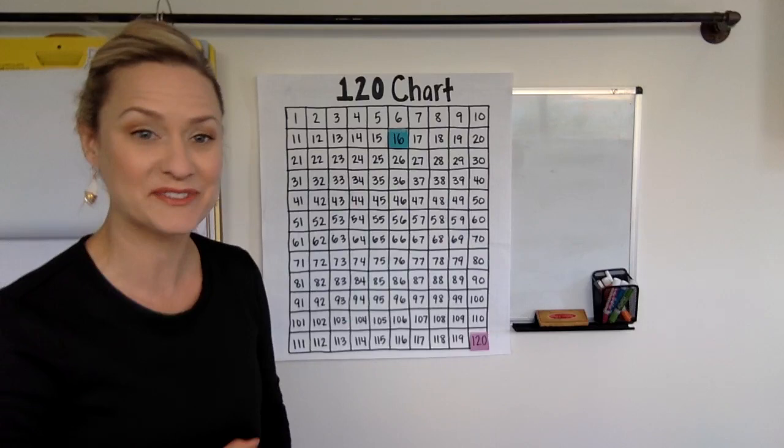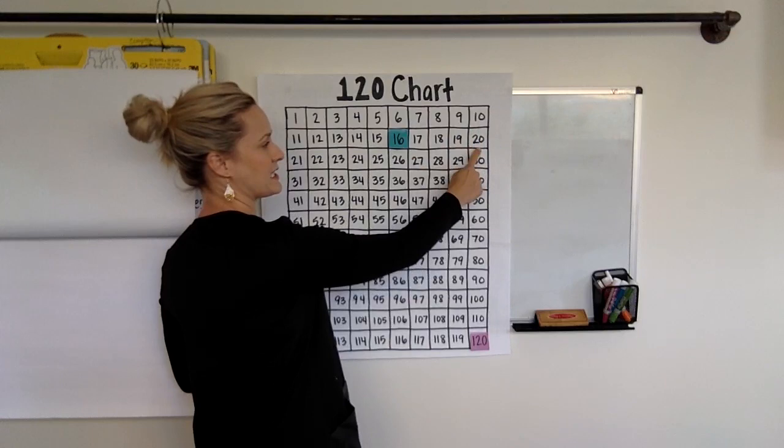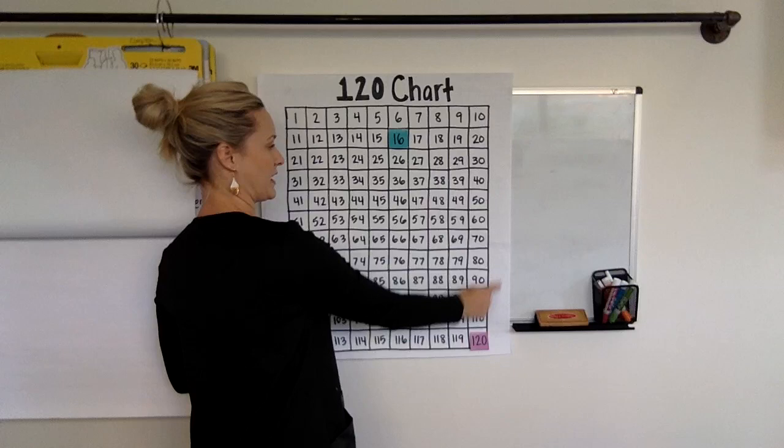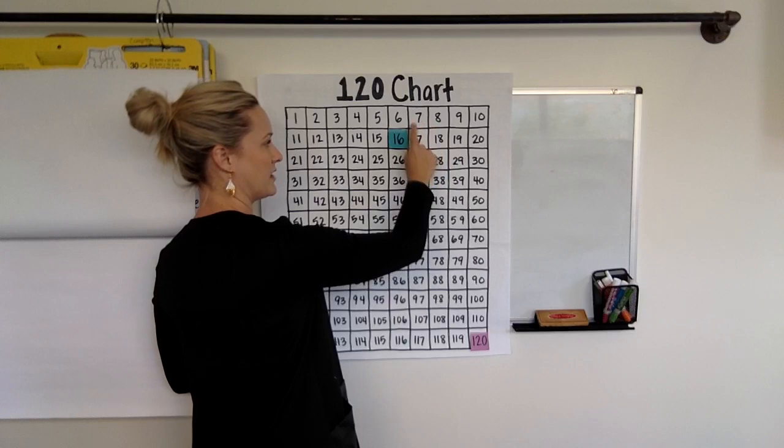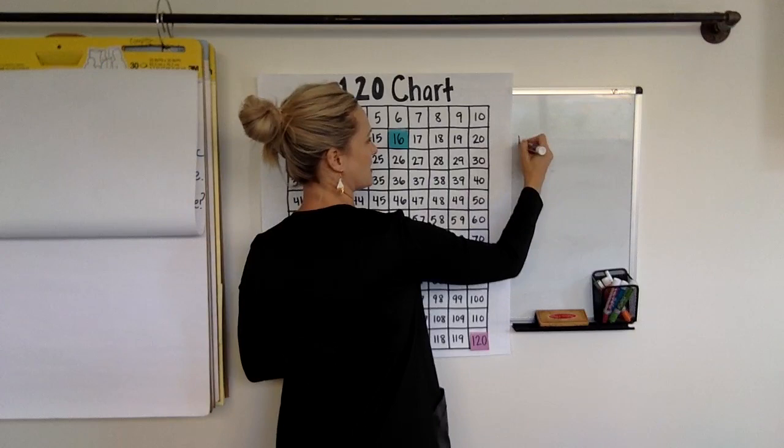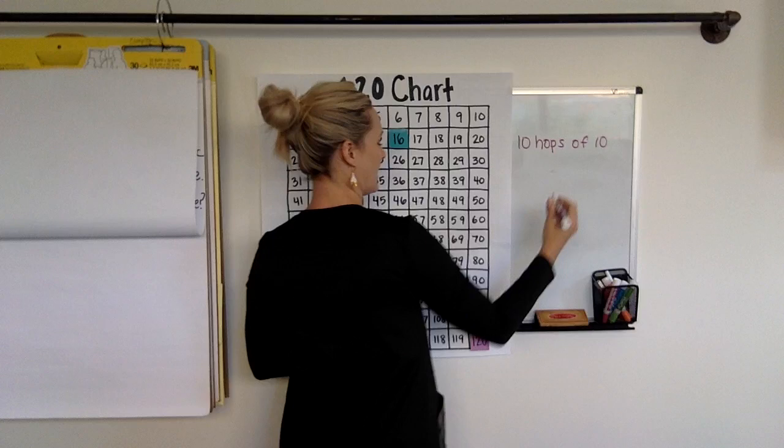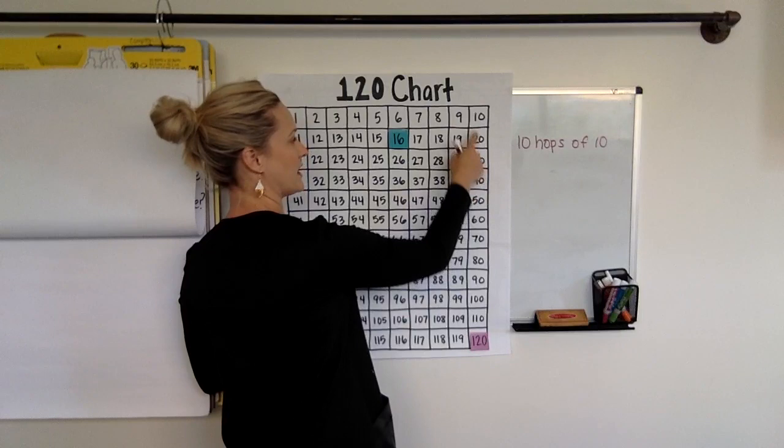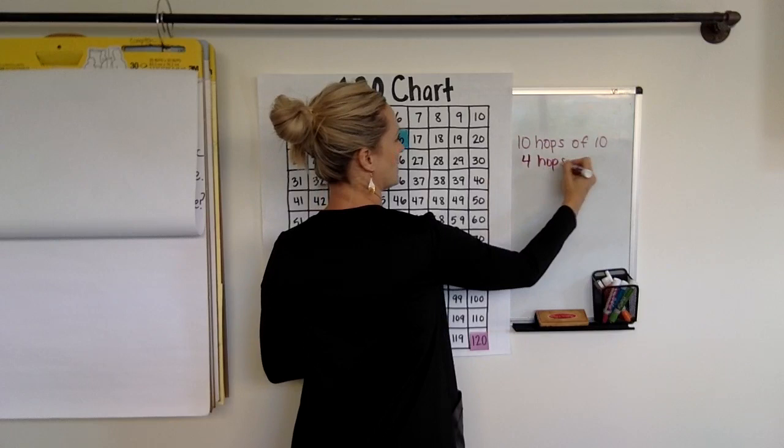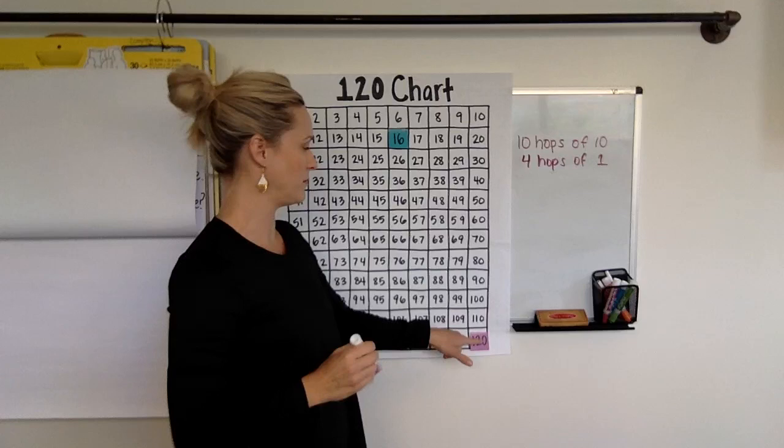Now, we would be at 20 and we have to get to 16. So we're going to count some more. So let's see. We have 100, 101, 102, 103, 104. So maybe you did ten hops of ten and then you did four hops of one. Okay, so how far apart would they be if we had ten hops of ten and four hops of one?